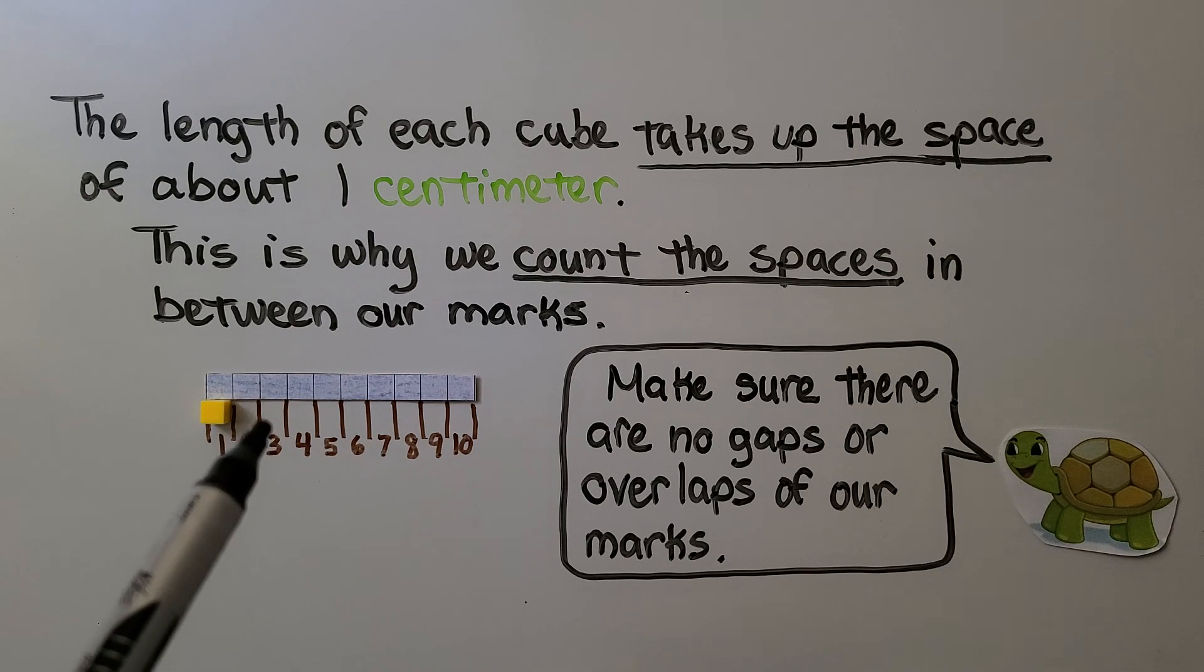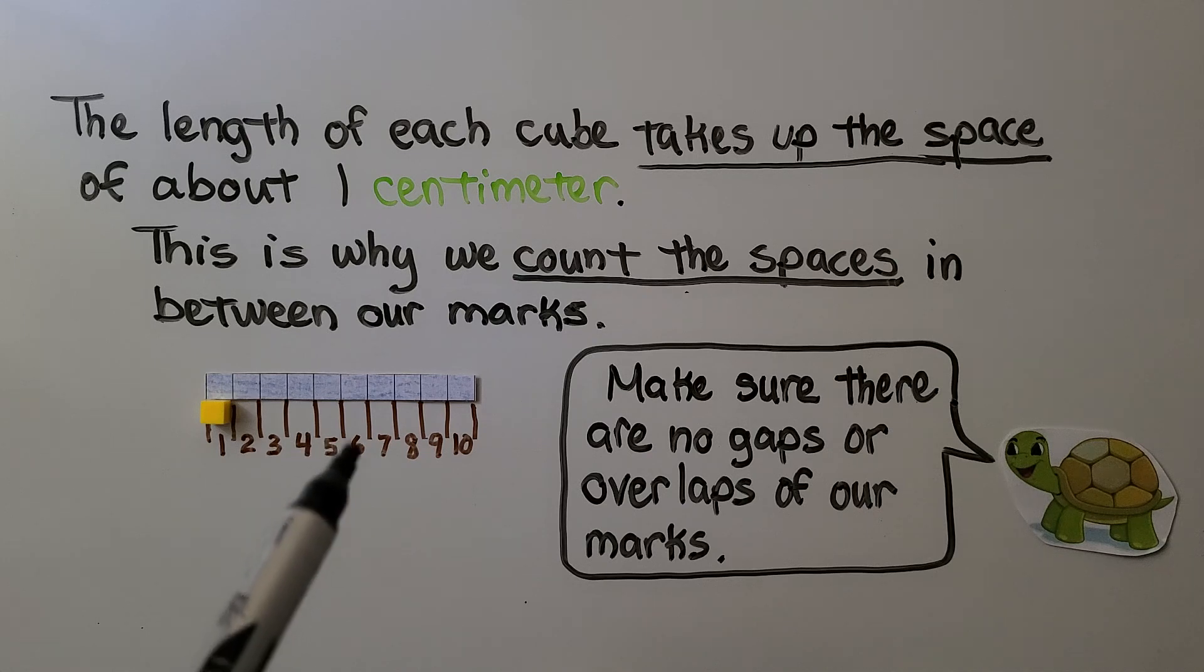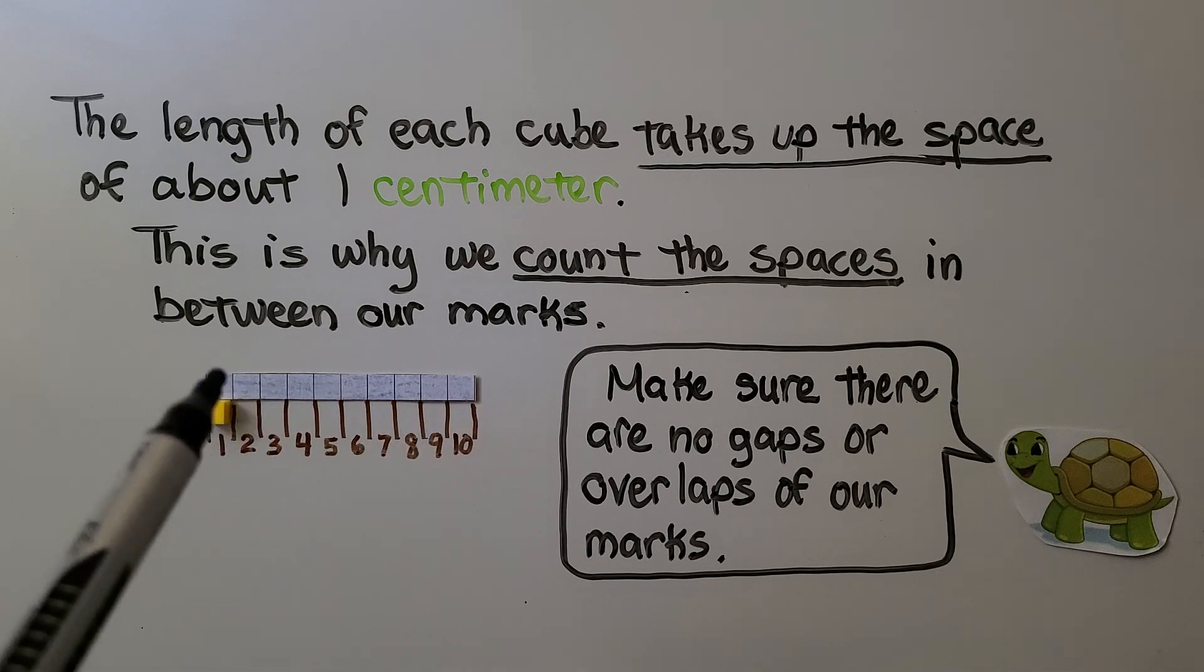This is one, two, three, we're counting the space right here, four, five, six, seven, eight, nine, ten. So this is 10 centimeters or about 10 centimeters. We make sure there's no gaps or overlaps in our marks.